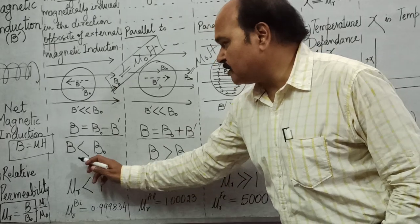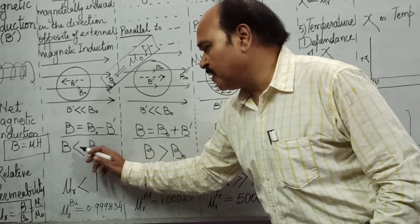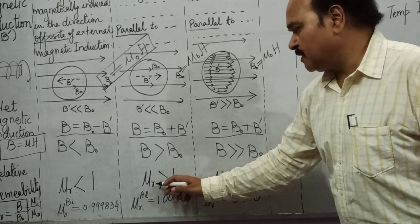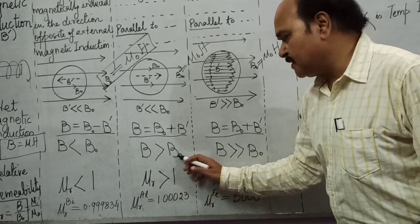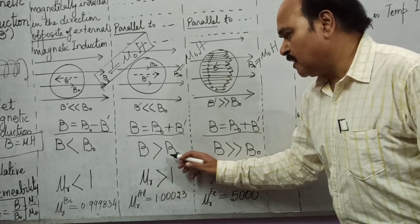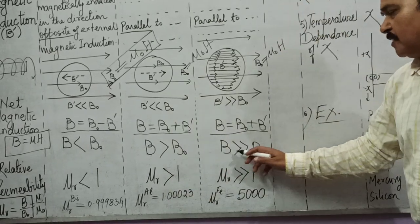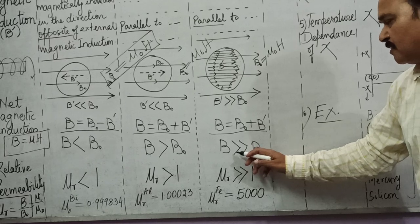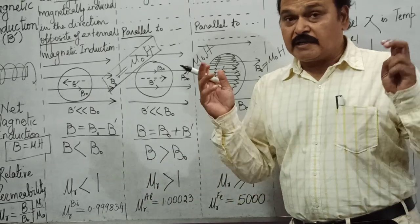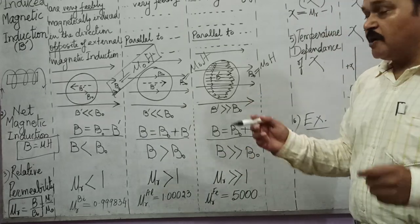Since B = μr · B0, for diamagnetic substances μr is slightly less than one, because B is slightly less than B0. For paramagnetic substances μr is slightly more than one. For ferromagnetic substances μr is much greater than one, because the net field is much greater than B0.